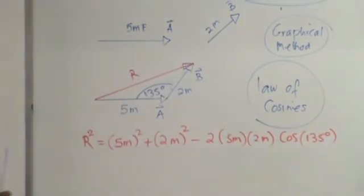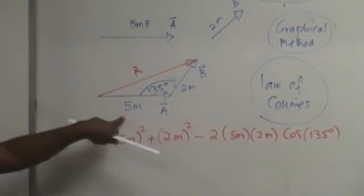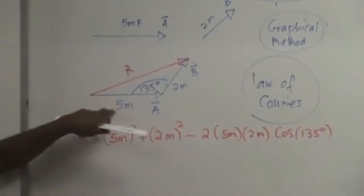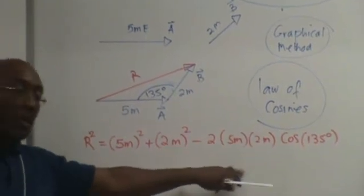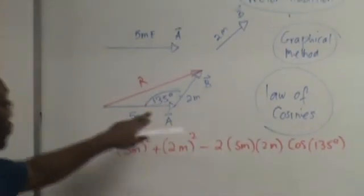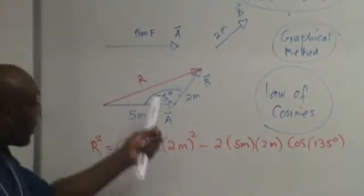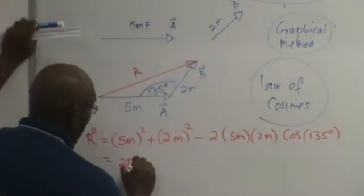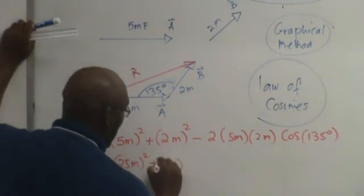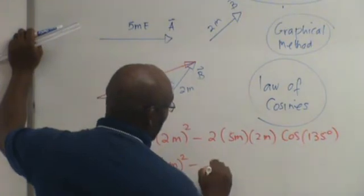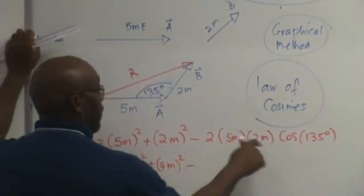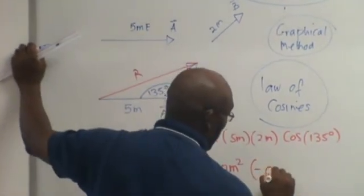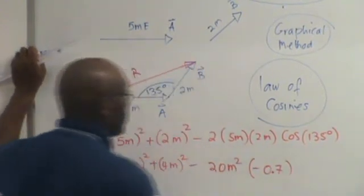So what does this say? The usual law of cosines is the square of the first side plus the second side minus 2 times the first side times the second side, which in this case is 5 and 2, times the cosine of the angle between the two vectors that you're adding. In this case the angle is 135. So this gives us 25 meters squared, 4 meters squared minus, this is 20 meters squared times negative 0.7.